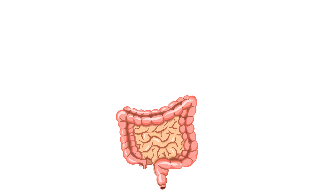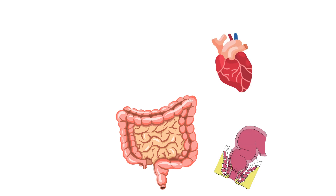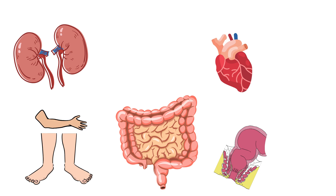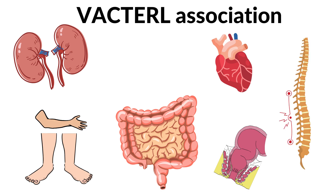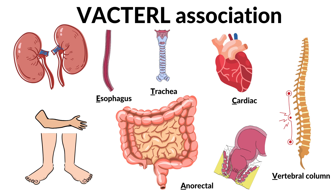Nearly half of these babies have one or more additional birth defects, such as problems in the digestive system — especially in the intestines or anus — as well as in the heart, kidneys, limbs, or vertebral column. This is known as the VACTERL association: V for vertebral column, A for anorectal, C for cardiac, T for trachea, E for esophageal, R for renal, and L for limbs. A baby born with esophageal atresia should be checked in all these regions for additional abnormalities.